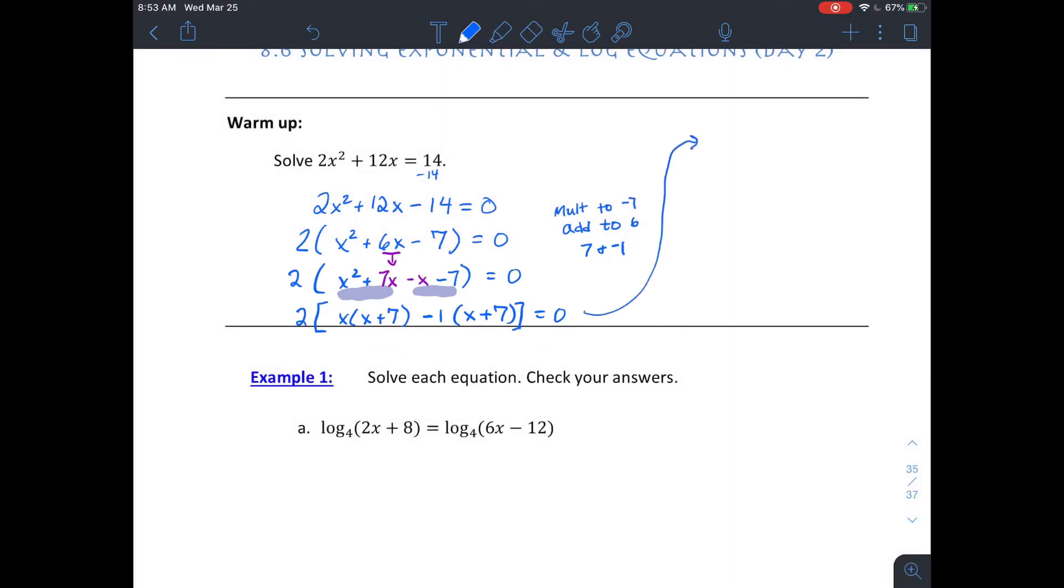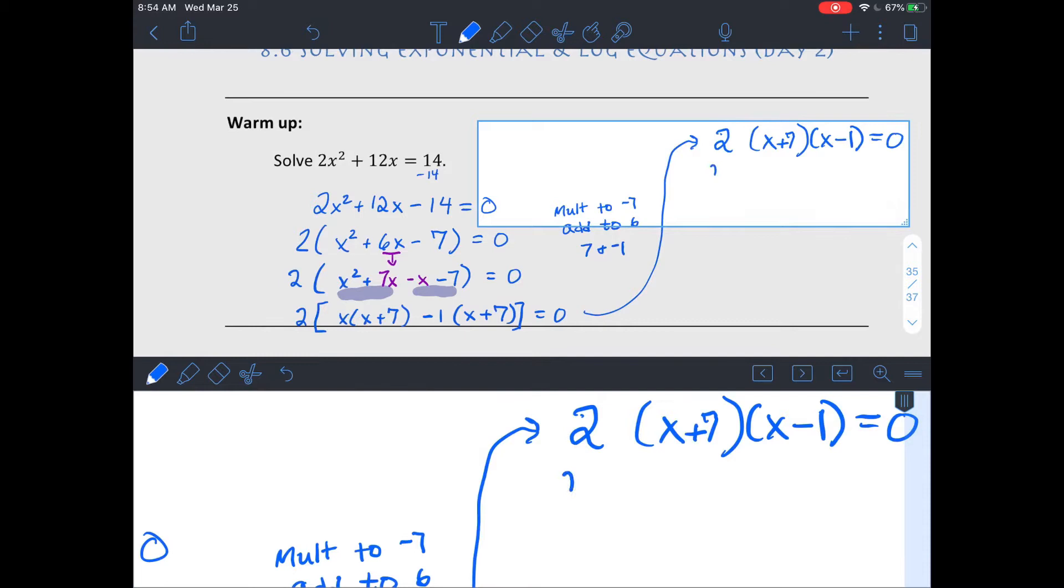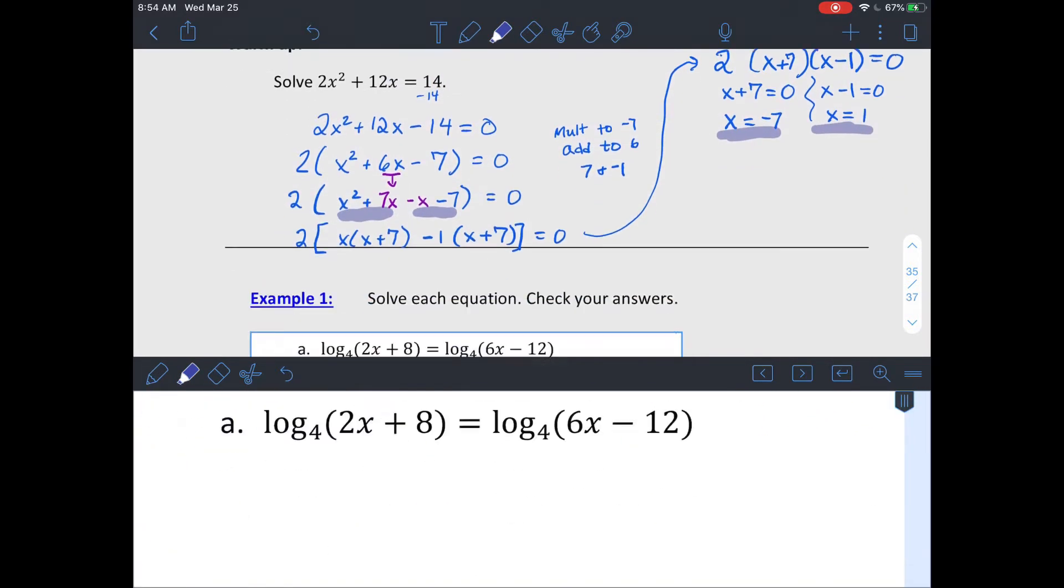So you can write your factored version as 2 times the quantity x plus 7 times x minus 1. This whole thing is equal to 0. So the x values that would make each factor equal to 0 would be x equals negative 7 and x equals positive 1. So you're gonna get to do some factoring today. You guys are pros at that, hopefully by now. If not, you got another chance to practice it.